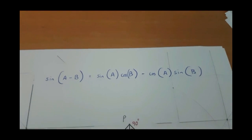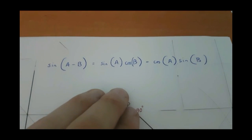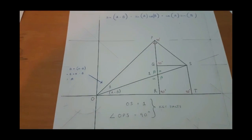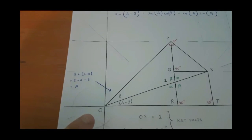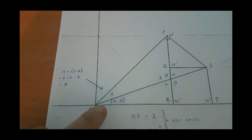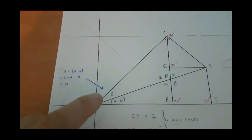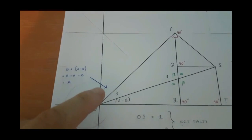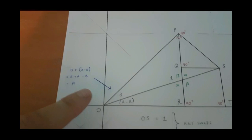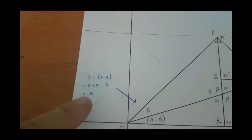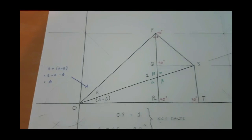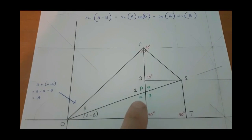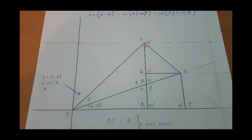Now before I begin proving this, we need to look at this diagram very carefully. First of all, let's start off at the origin. At this origin, there are two angles: B and also A minus B. However, when you add up these two angles, what you get is A. The length from O to S is exactly equal to 1 — very important.